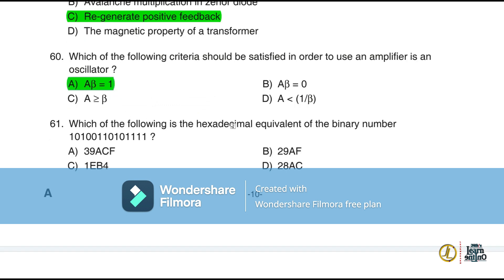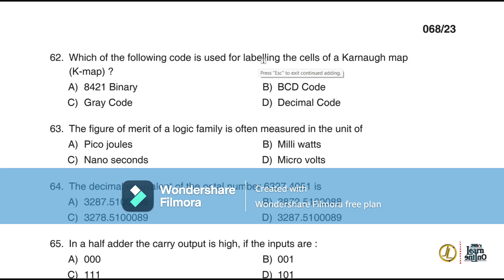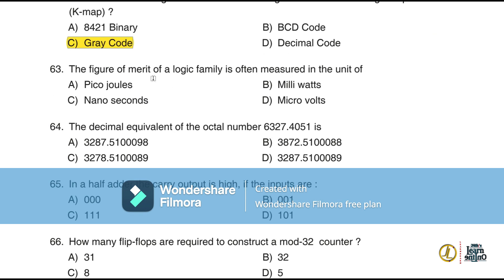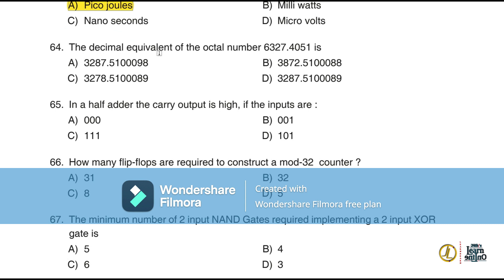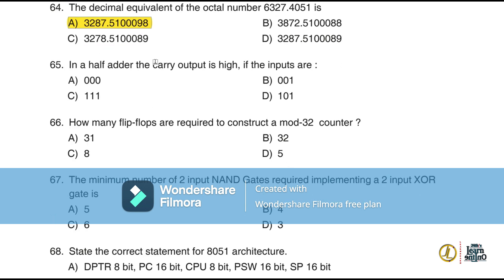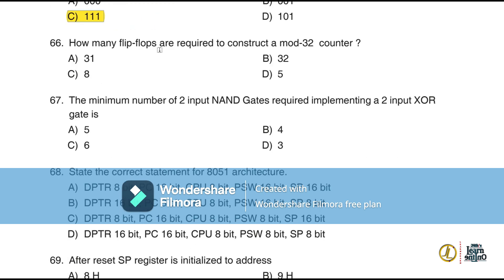Question 61: The hexadecimal equivalent of the given binary number is 29AF1. Question 62: The code used for labeling cells of a Karnaugh map is Gray code. Question 63: The figure of merit of a logic family is measured in picojoules. Question 64: The decimal equivalent of the given octal number is option A. Question 65: In a half adder, the carry output is high when both inputs are 1 (option C). Question 66: The number of flip-flops required to construct a mod-32 counter is five.